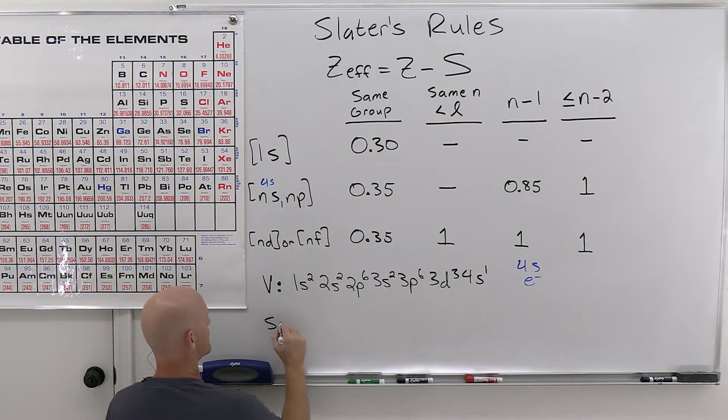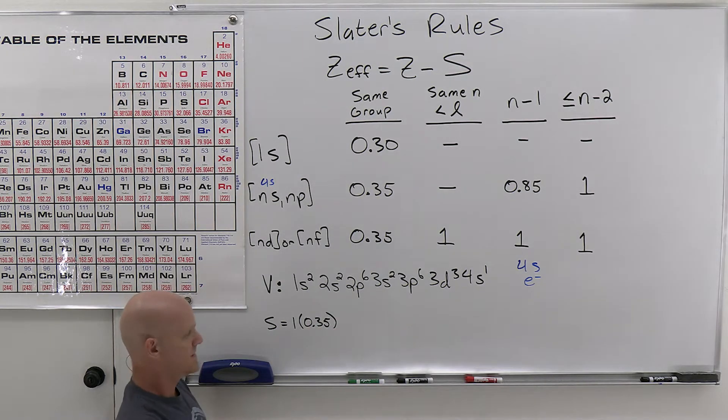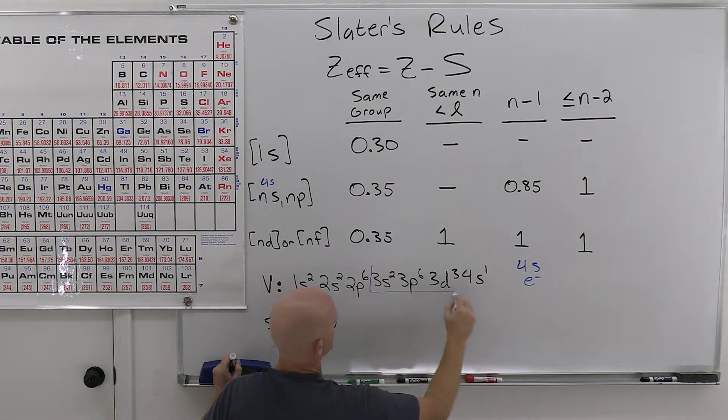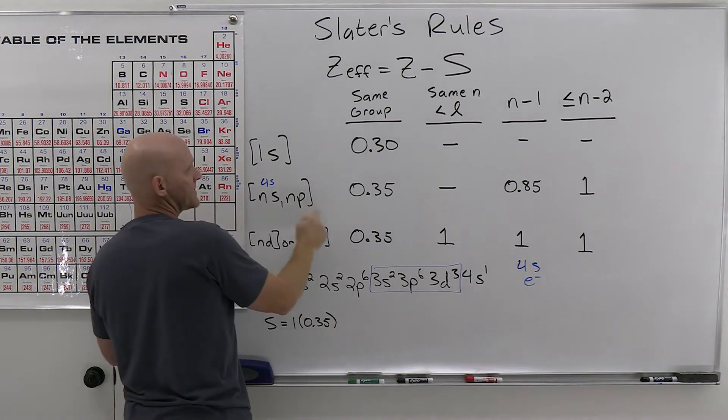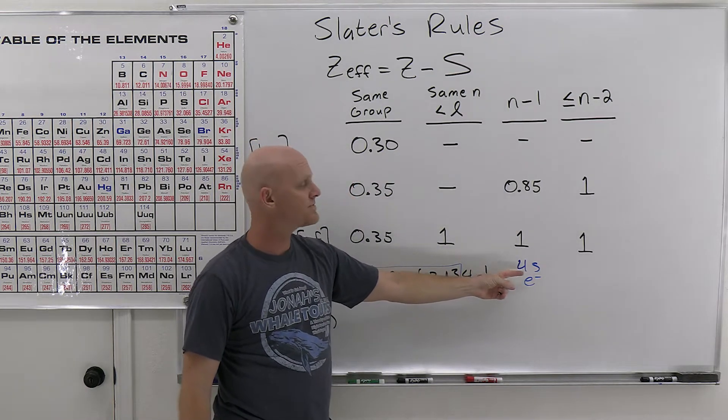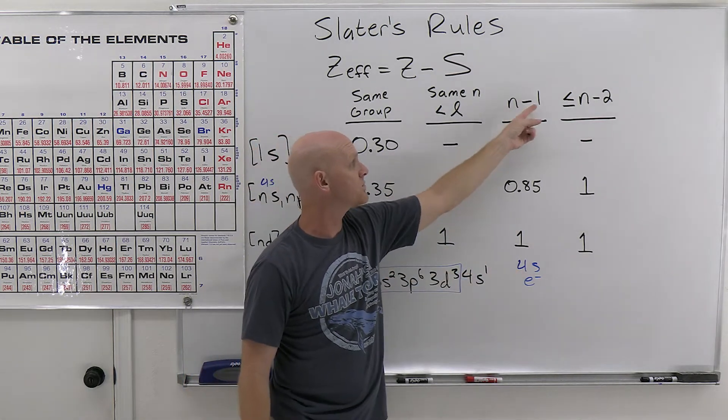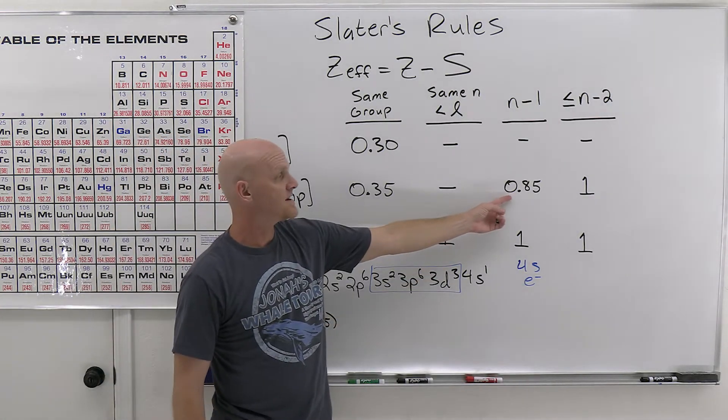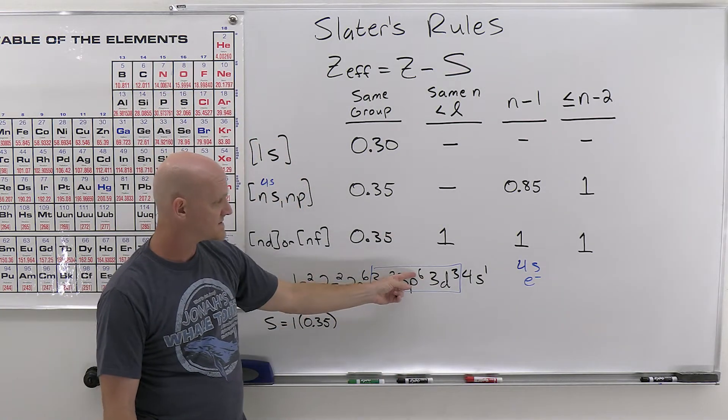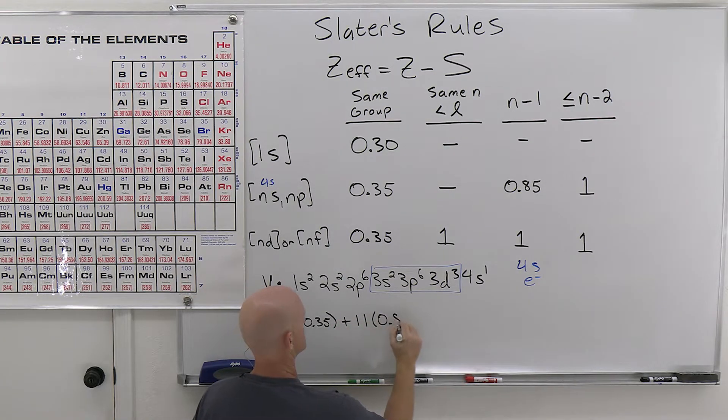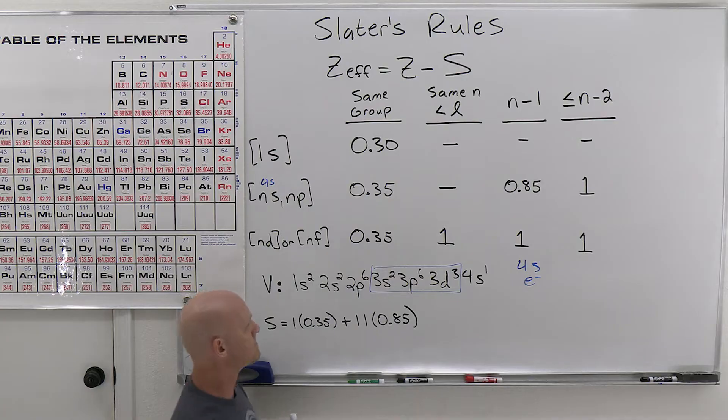So when we go to calculate s here, our screening constant, we're going to have one electron contributing 0.35 because it's in the same group. And then now we're going to find out that all of these electrons... So for an S and P electron, we're just going to make those in the previous shell. We're looking at a 4s electron and an electron in the fourth shell. Those are all just in the 4 minus 1, the third shell, the 3s, the 3p, the 3d. And they're all going to contribute equally according to Slater's rules here. And in this case, each a value of 0.85. And so that's a total of 2 plus 6 is 8, plus 3 is 11. So 11 times 0.85.